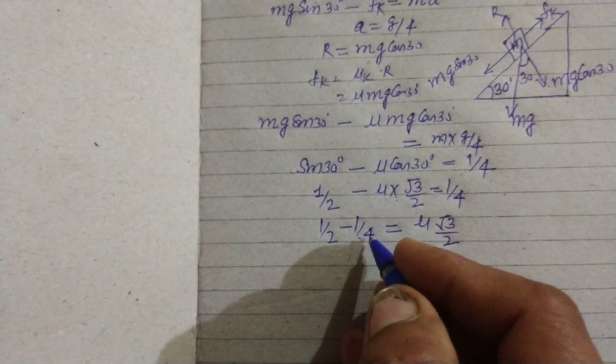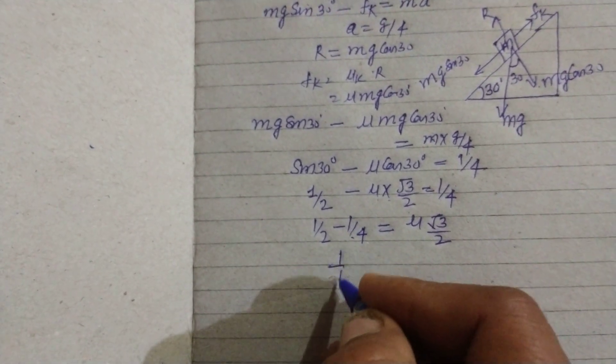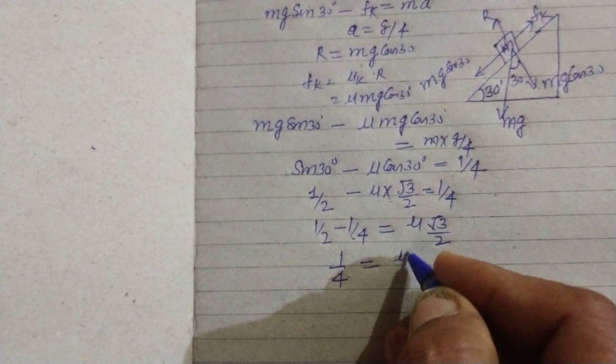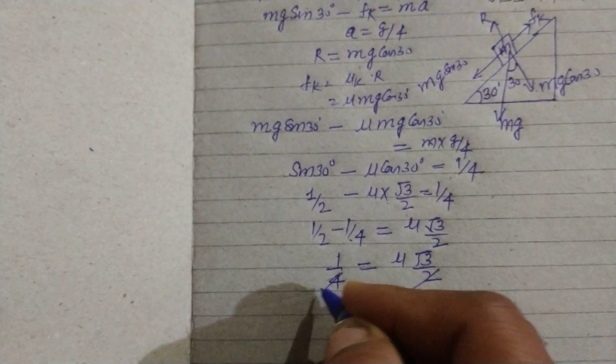Now 1/2 minus 1/4 is 1/4, equals μ times root 3 by 2.